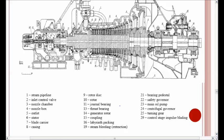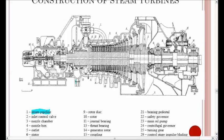Looking at the various parts of a steam turbine: we can see the steam pipeline, the inlet control valve which controls the steam flow, the stator, and the rotors.